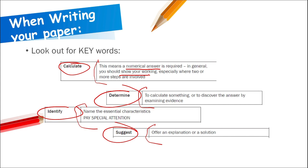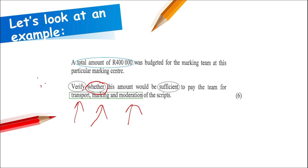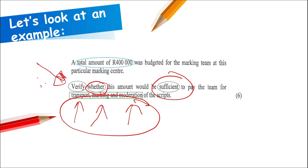Here's an example from a past paper: a total of R400,000 was budgeted for a marking team. The keyword is 'verify whether this amount is sufficient'. 'Sufficient' means enough. 'Whether' means it can be or it can't be. They tell you three things to consider, so taking time to read carefully tells you exactly what to work out and how to answer.